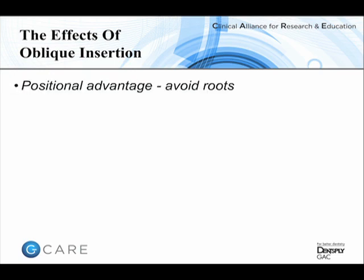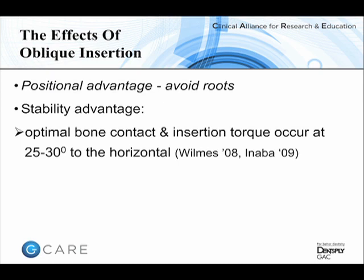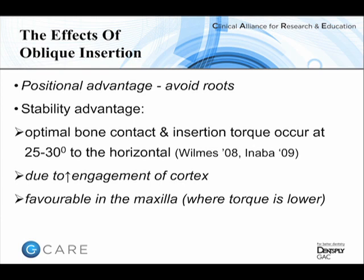Oblique insertion is relevant. From a positional perspective, directing a mini-implant towards the apical aspect of the roots means moving between the tapered parts of the roots, avoiding root proximity. From a stability point of view, several studies have shown better bone contact and higher insertion torque when a mini-implant is inserted at a 20–30 degree angle towards the apex of the teeth, because it provides greater engagement with the cortical bone rather than traversing straight through it. This is particularly useful in the maxilla where the cortex tends to be thinner.